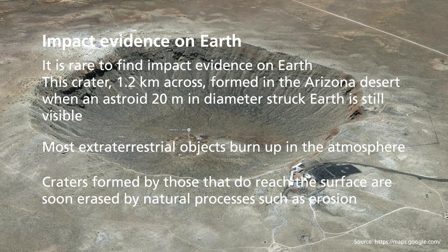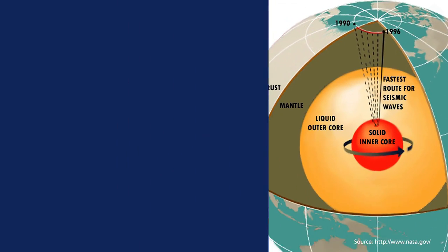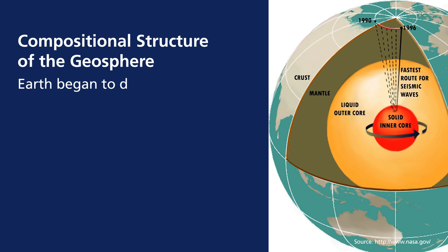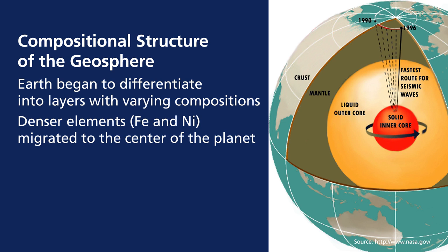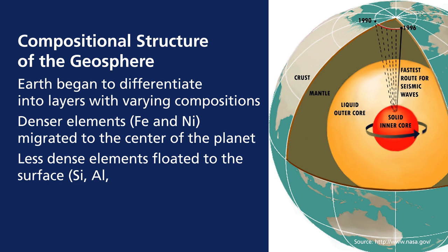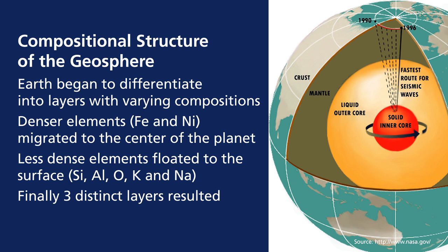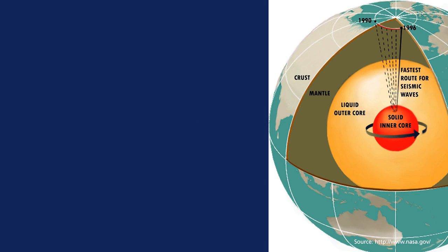The question is why the geosphere changes through time — we'll be looking at plate tectonics in further detail. The surface of the Earth is constantly being renewed, in contrast to the Moon which is not being renewed. Now let's look at the compositional structure of the geosphere. The Earth began to differentiate into layers with varying compositions. The denser elements such as iron and nickel migrated to the center of the planet; less dense elements like silicon, aluminum, oxygen, potassium, and sodium floated to the surface. Once differentiated, there were three distinct layers: the innermost core, the mantle, and lastly the crust.